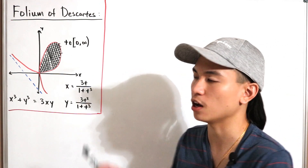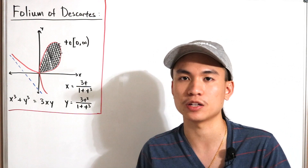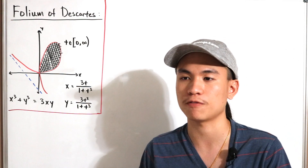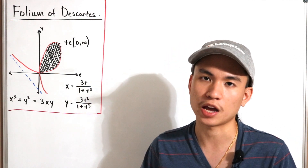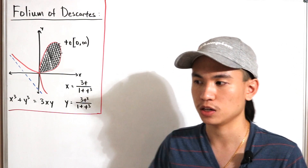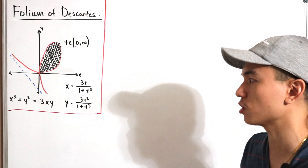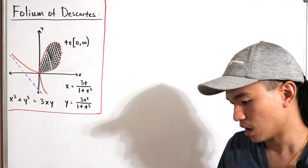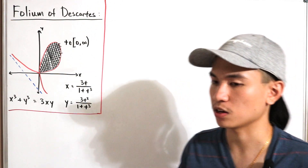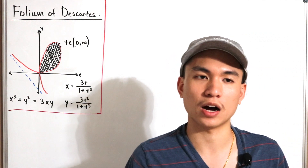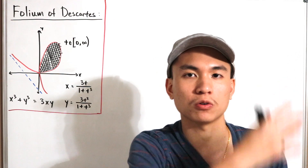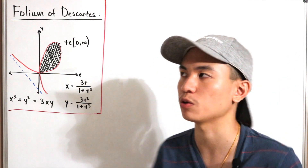We'll use Green's theorem to help calculate this integral. Specifically, the area of a region from a Cartesian coordinate standpoint is defined as the double integral over region D of 1 dA. We'll use that along with the given parameterizations, converting back into line integral space — going backwards from the double integral to the line integral.